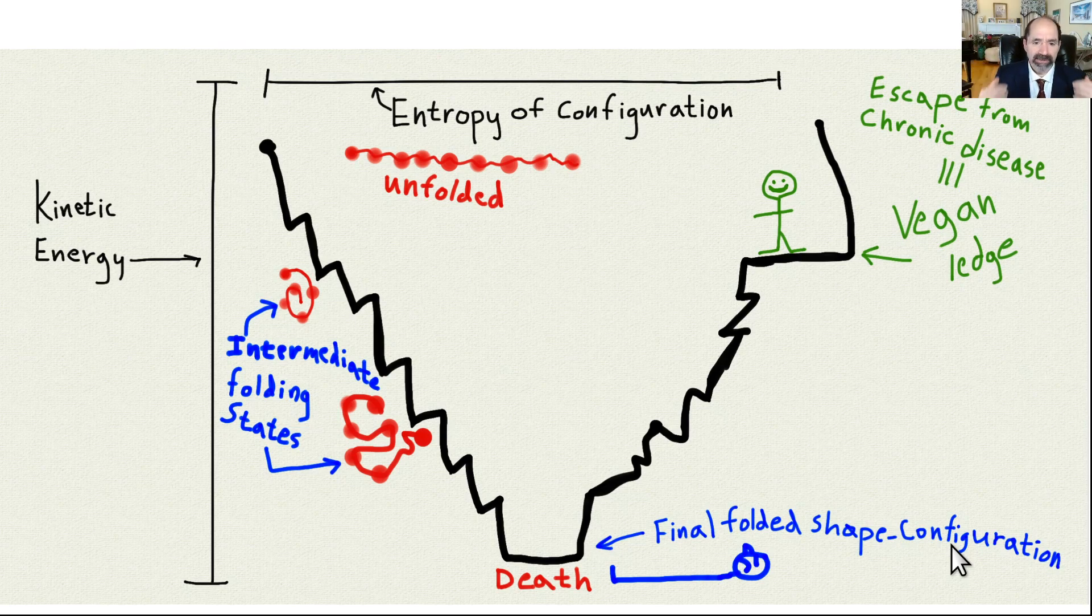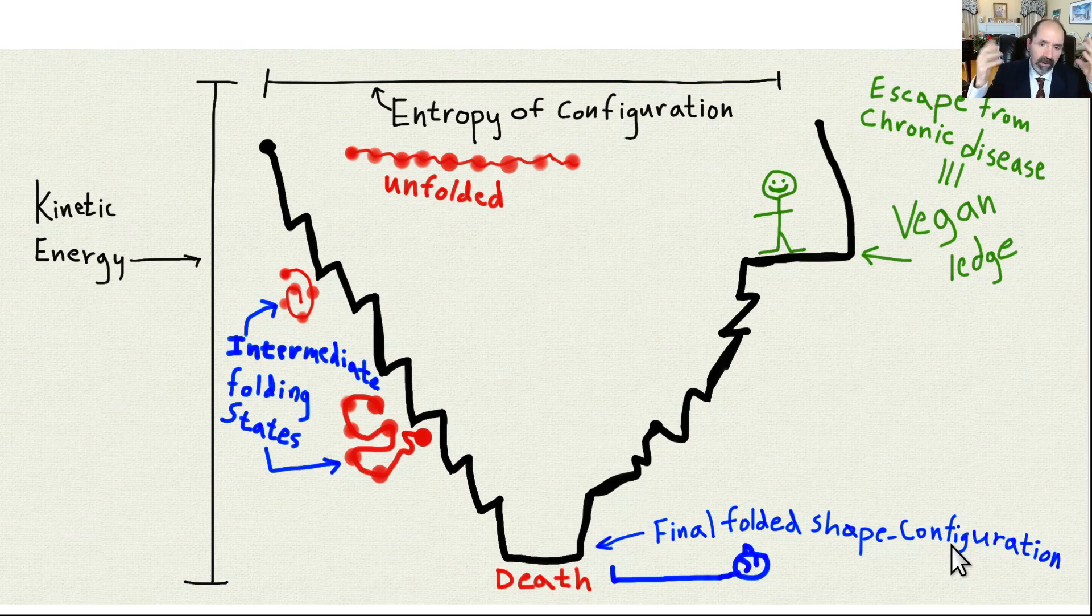Okay, this video is about chronic disease is like a protein folding probability funnel. I'll explain what that means, and it'll make sense here in just a moment.